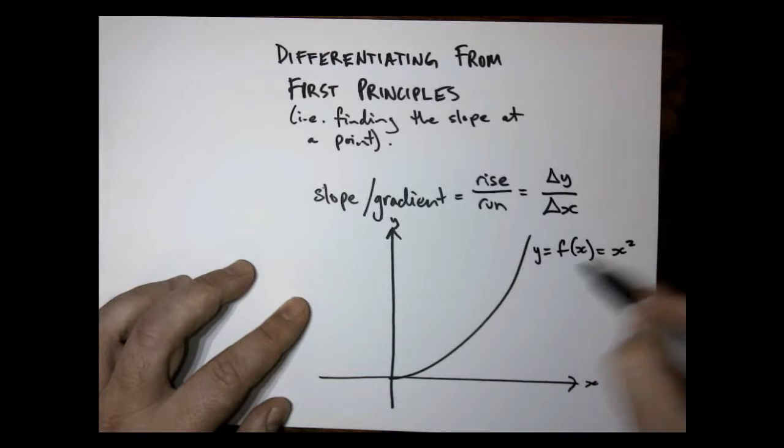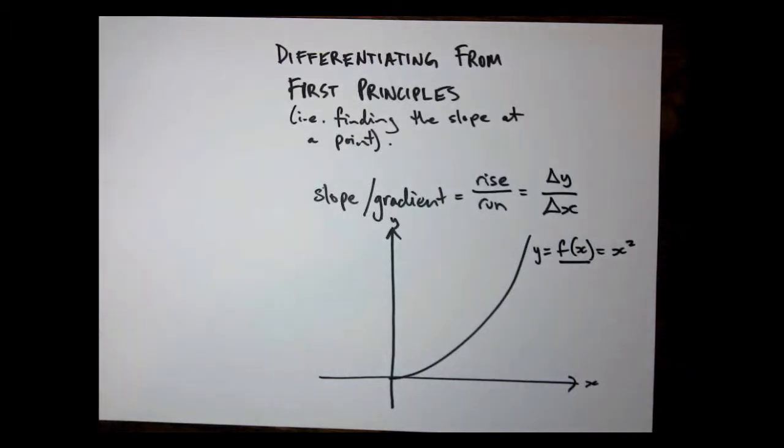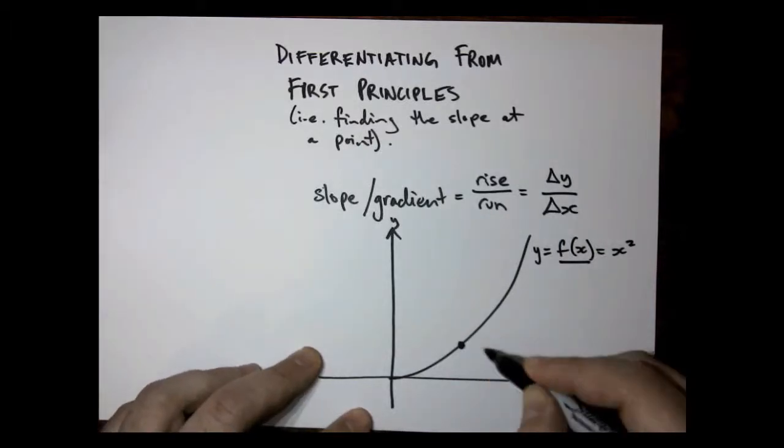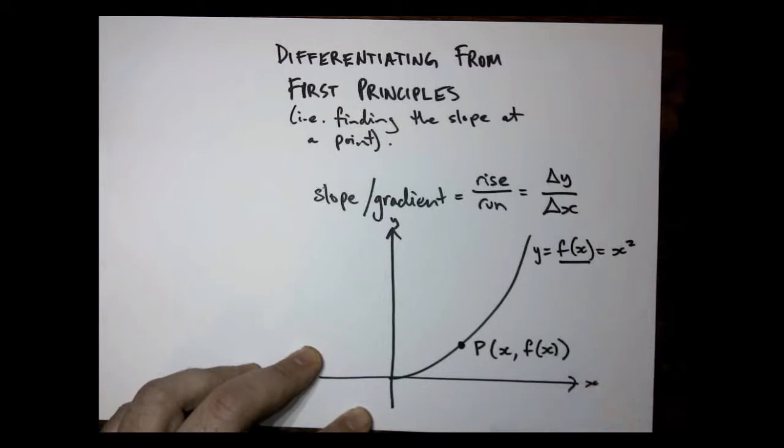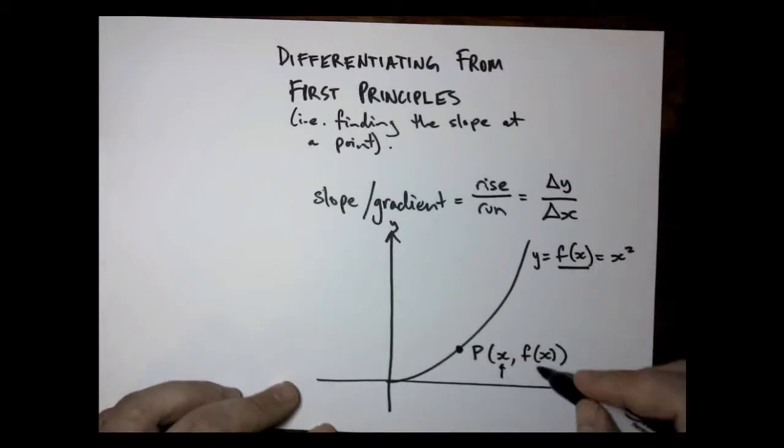Y is equal to x squared. I've included the function notation because this is going to be a really useful tool to look at all of this. And we're going to look at the general point P, given by x, f of x.